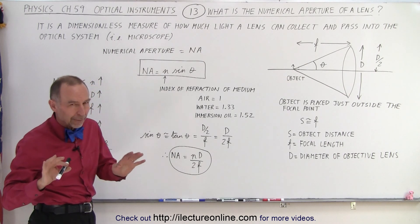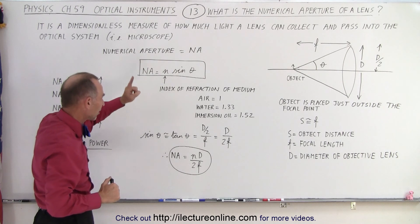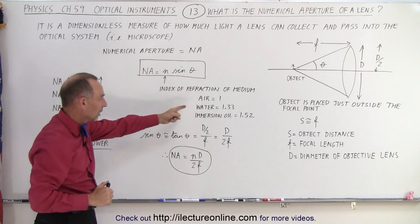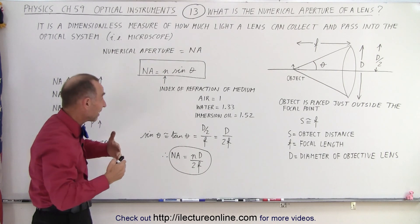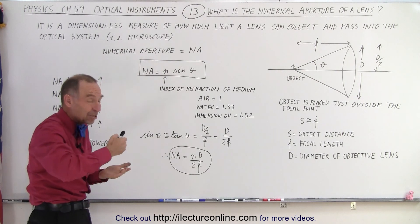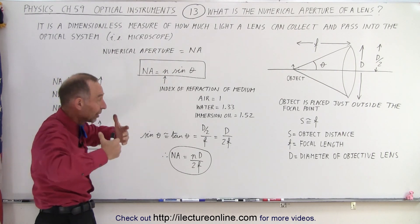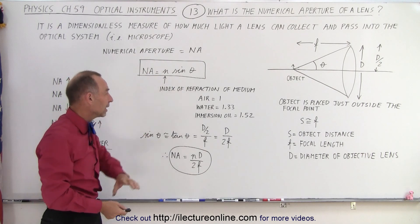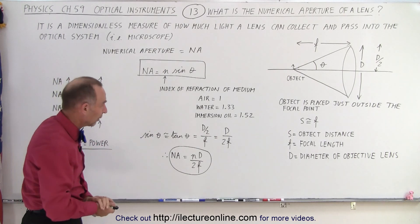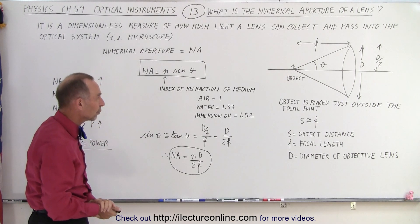So you might already begin to think, wait a minute, air has an index of refraction of 1. Immersion oil has an index of refraction of 1.52, which means that placing an oil drop there will increase the amount of light going into the lens, just because this here, N, is a bigger number than air being equal to 1. So there you have already an inroad to the other reason.